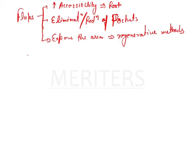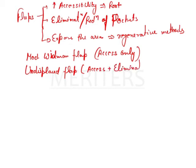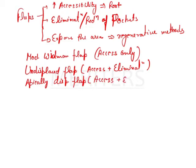The main flaps we use are: first, the Modified Widman Flap, which is used only for gaining access and has nothing to do with elimination of pockets. Second, the Undisplaced Flap, which is used for gaining access as well as elimination of pockets. Third, the Apically Displaced Flap, which is also used for gaining access as well as elimination of pockets.